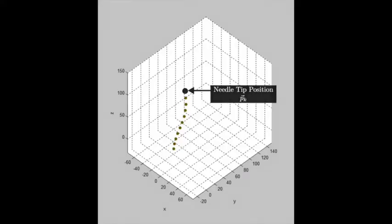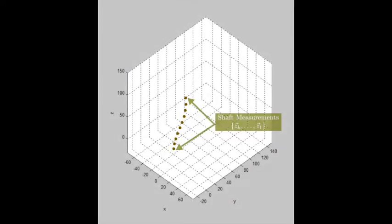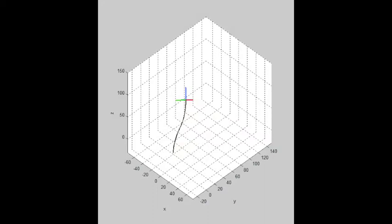Given a tip position and set of previous measurements, we would like to find the orientation that best aligns the position's kinematic shaft with the measurements. To do this, we consider a tip state with a fixed position but varying orientation.